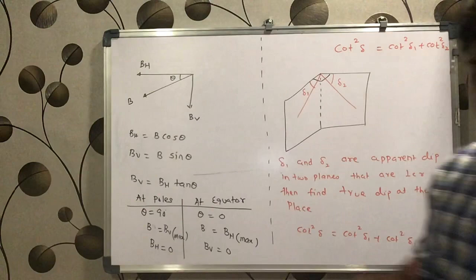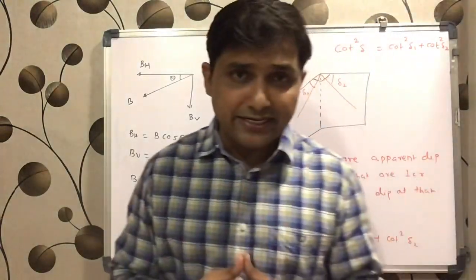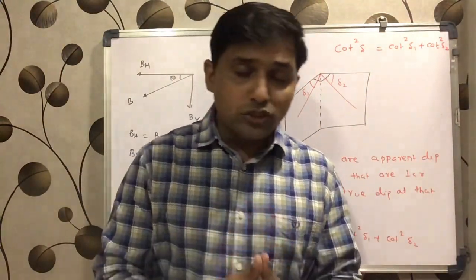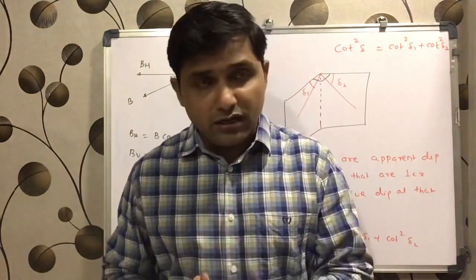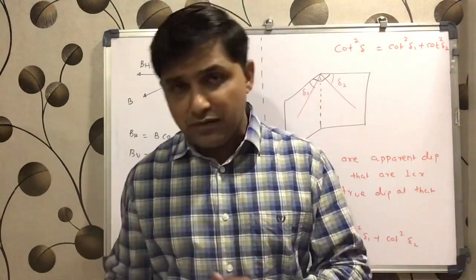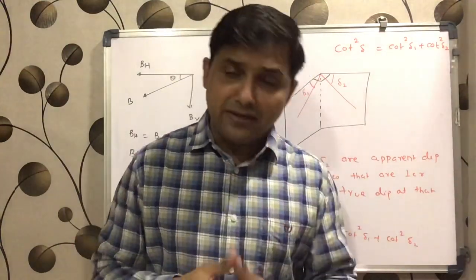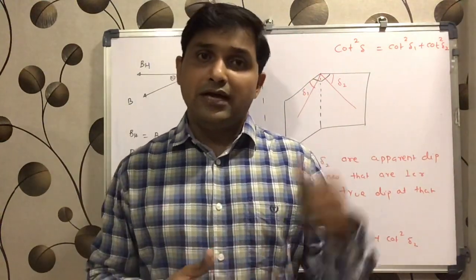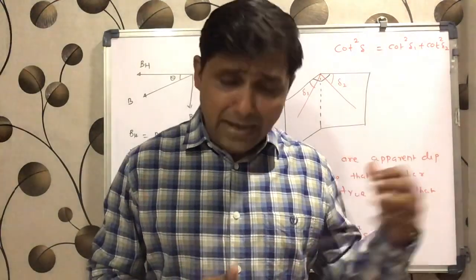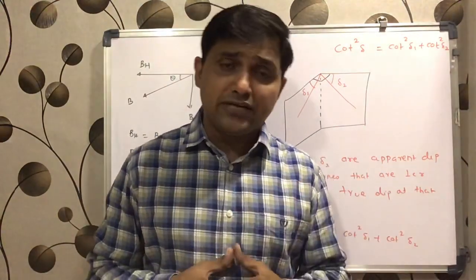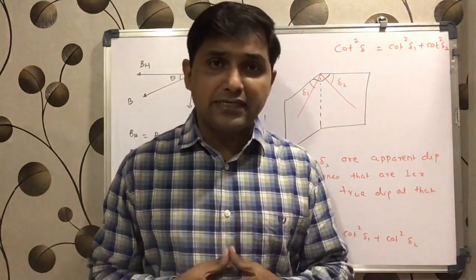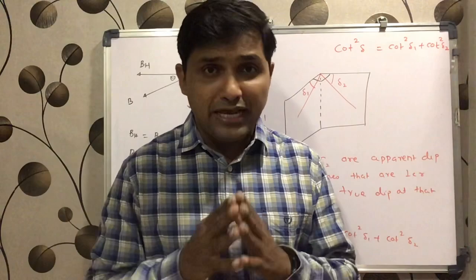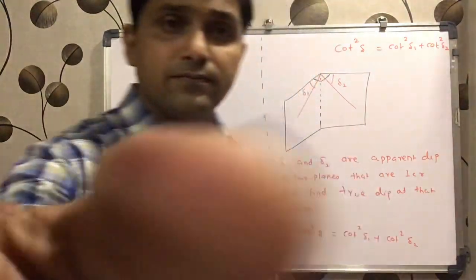So these were a few important terms related to Earth's magnetic field: horizontal component, vertical component, angle of dip, geographical meridian, magnetic meridian, angle of declination, and angle of apparent dip. I hope it helps you a lot. Thank you so much.